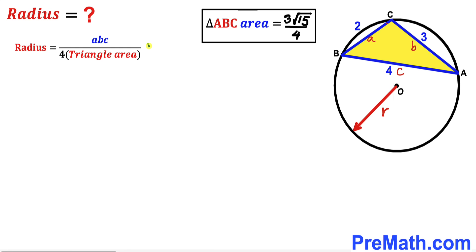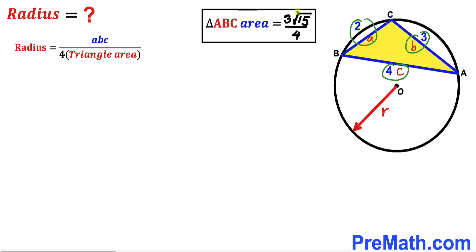Now we are going to calculate the radius of this circle. Let's recall the formula: radius r equals a times b times c all over 4 times the area of triangle ABC. Here our a value is 2, b value is 3, c value is 4, and the area of triangle ABC is 3 times the square root of 15 divided by 4.